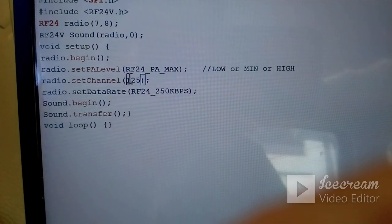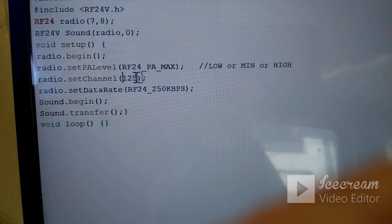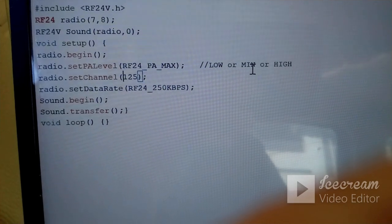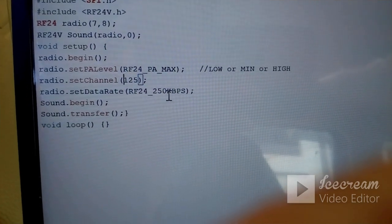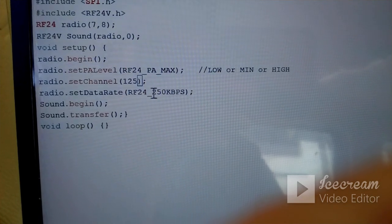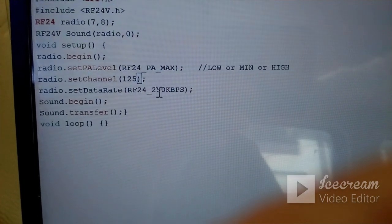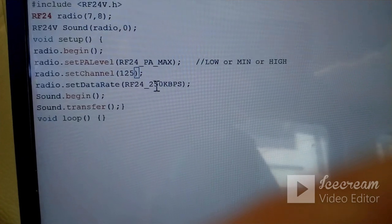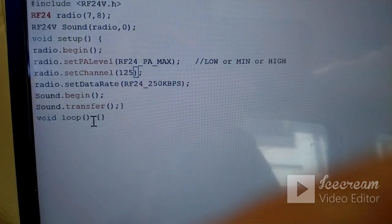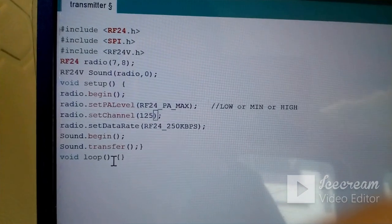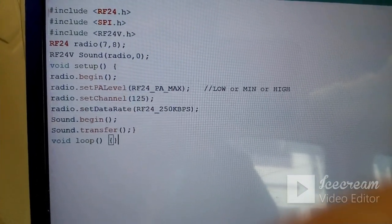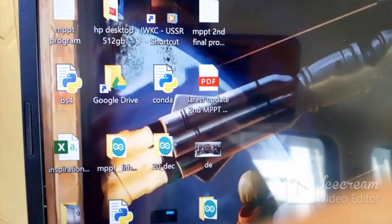And radio channel is 125. Remember that the radio channel must be same for both receiver and your transmitter. And the radio data set data rate is 250 kbps. And also remember, the data rate must be also same for both of them. And that's it, that's all for today. And put this program in both respective receiver and transmitter and it will work fine. Okay, I will put this code on my description.